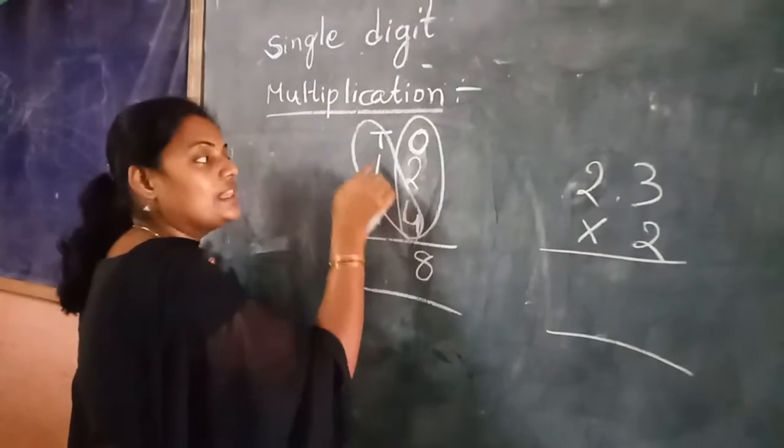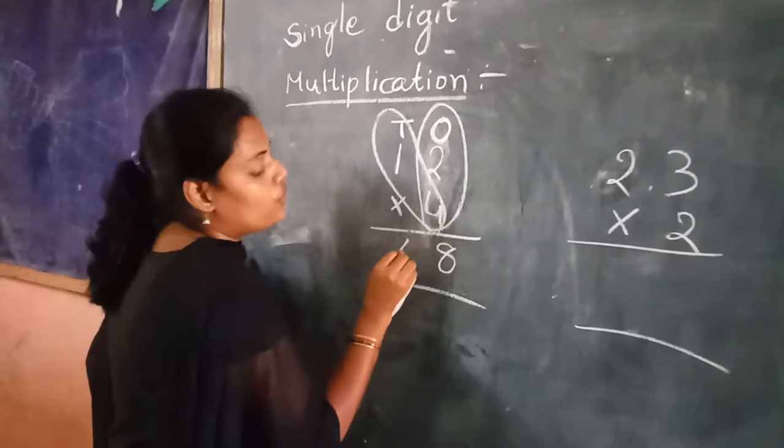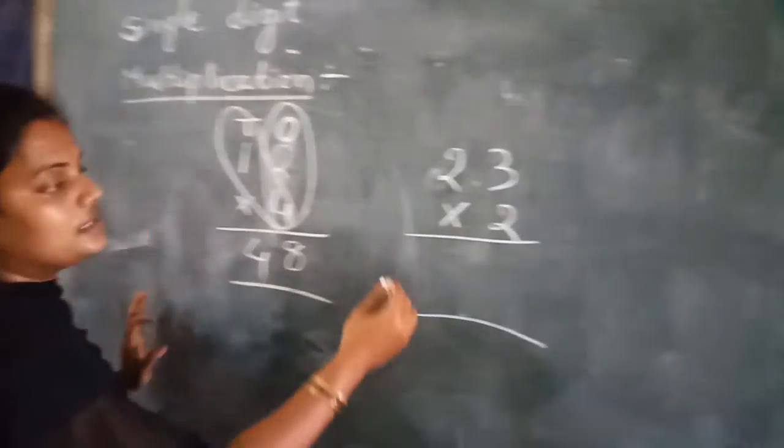Next, multiply 4 with 10's place. 4 into 1. Means what? 4 times 1 are 4. So this is the answer. Let us see the next answer.